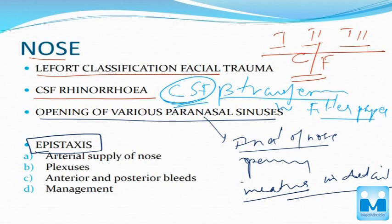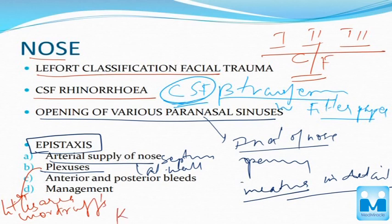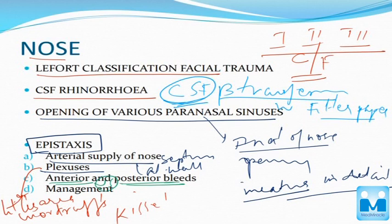Coming to epistaxis, first you have to know the arterial supply of the septum and lateral wall. Next, you have to know the plexuses — Little's area, Woodruff's area, and Kiesselbach's plexus. Then you have to know the differentiation between anterior and posterior bleeds — what conditions cause anterior bleeds, what causes posterior bleeds, how to differentiate them, and since the management is also different, we have to know the difference between the two.